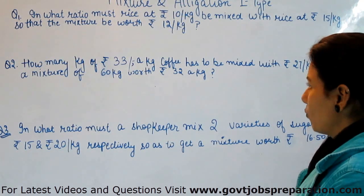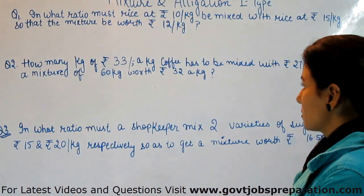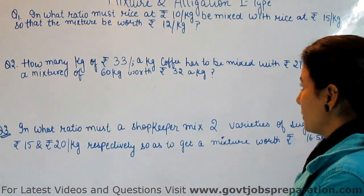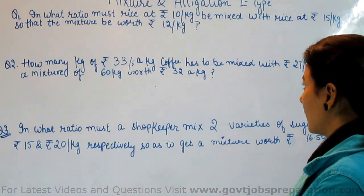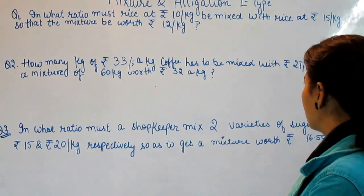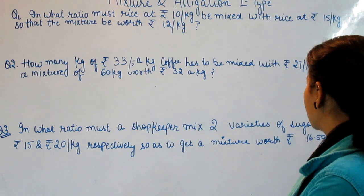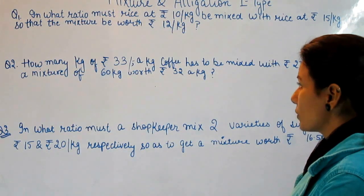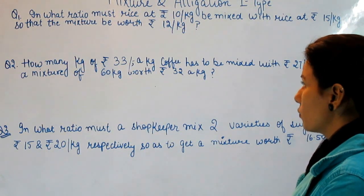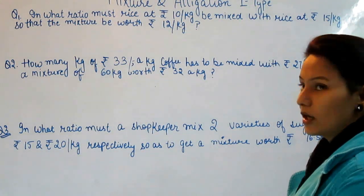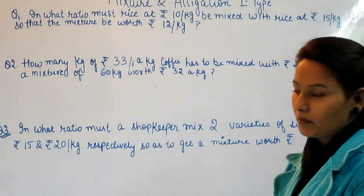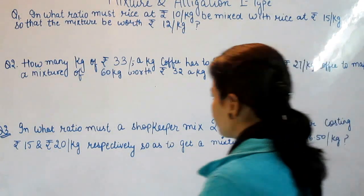First question: In what ratio must rice at Rs. 10 per kg be mixed with rice at Rs. 15 per kg, so that the mixture is worth Rs. 12 per kg?